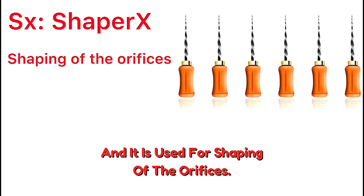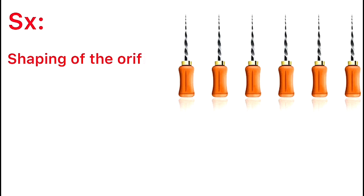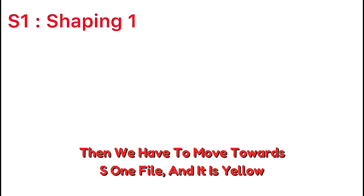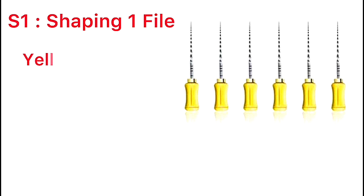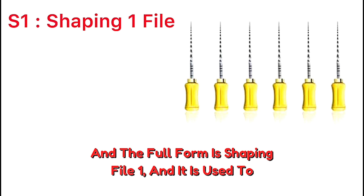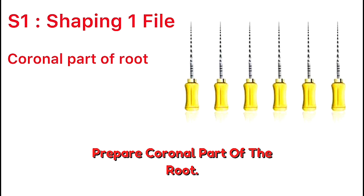After the SX file, we move towards the S1 file. It is yellow in color and the full form is Shaping File One. It is used to prepare the coronal part of the root canal.